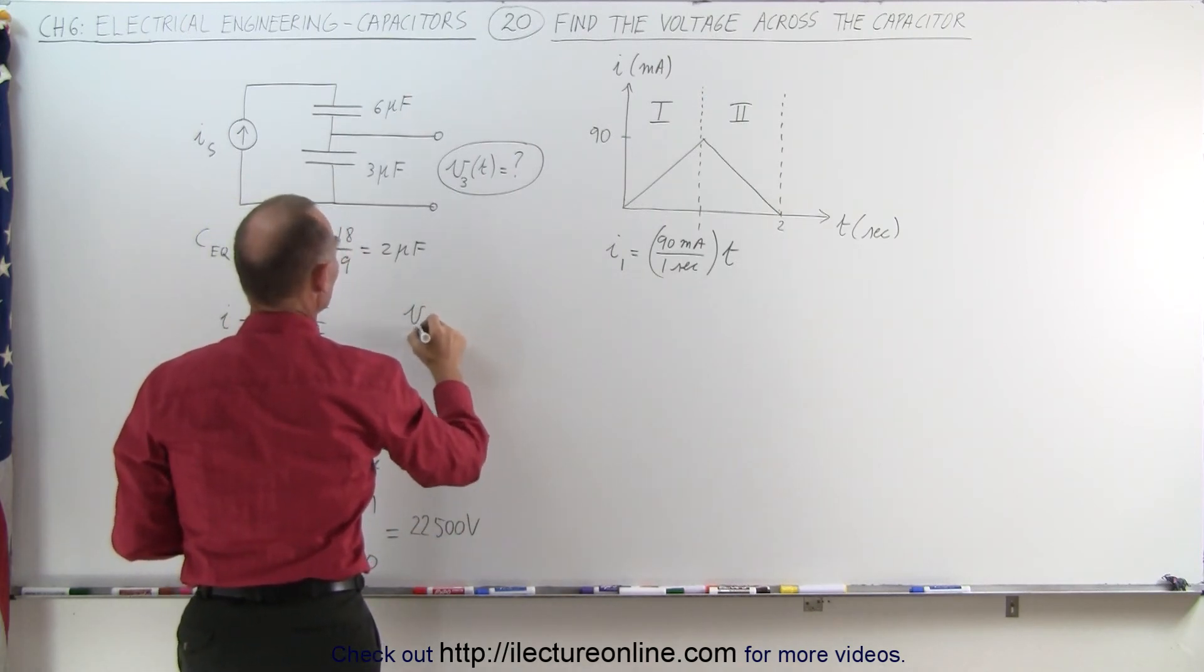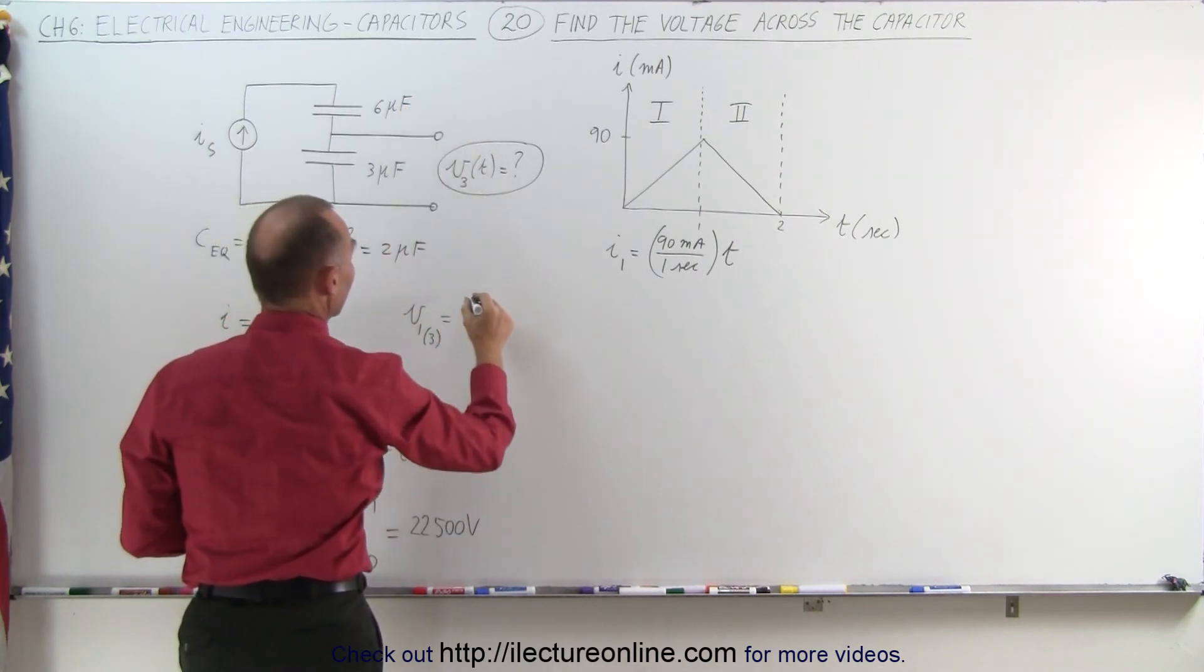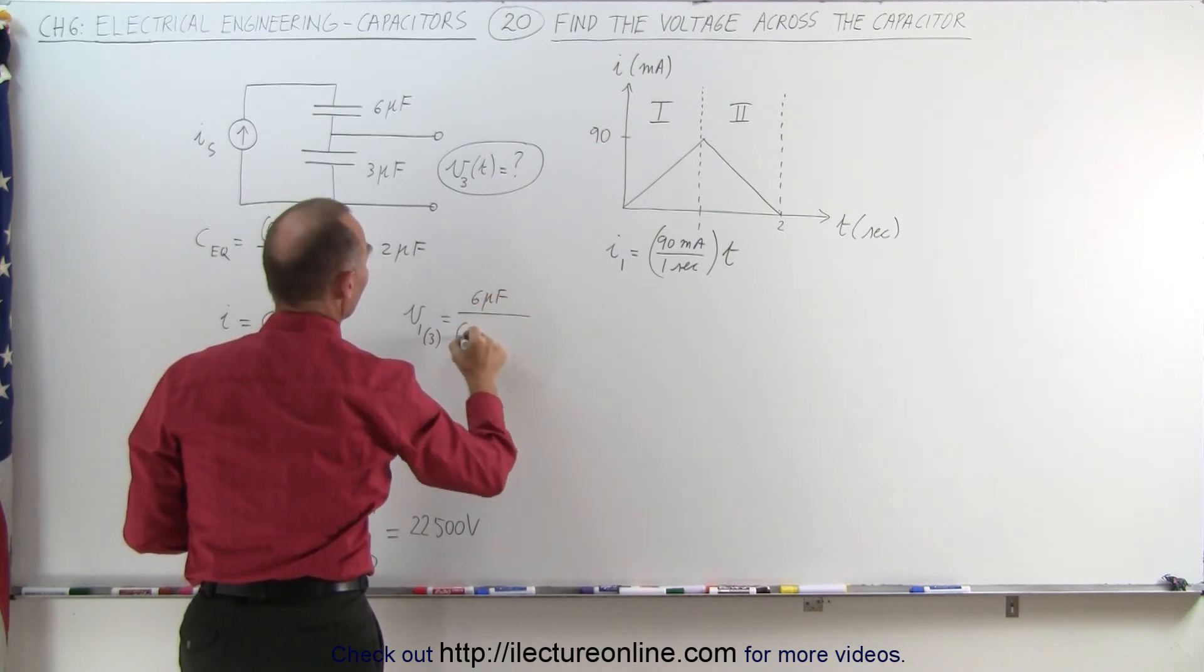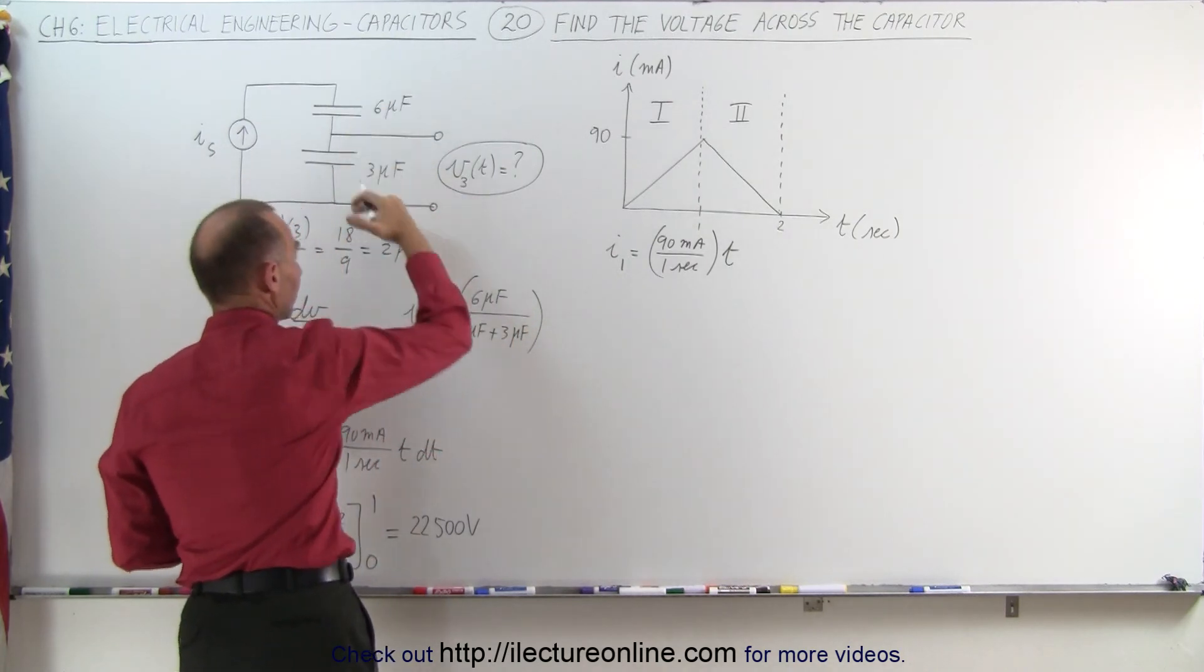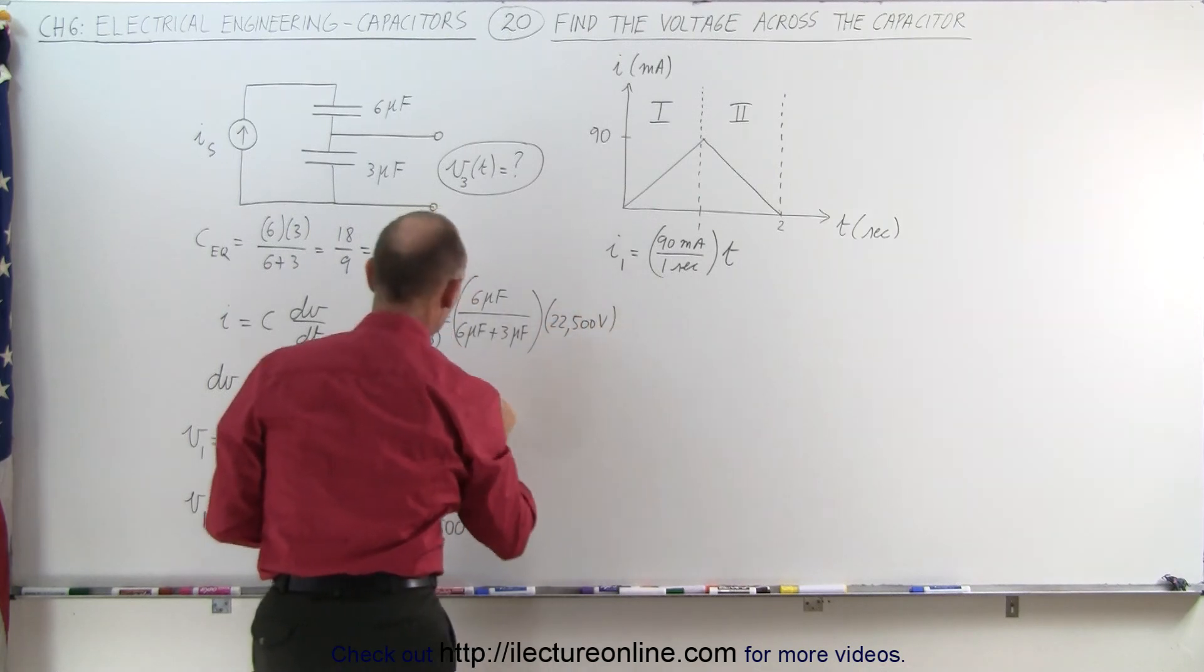So, the voltage in region 1 for the 3 microfarad capacitor is equal to the ratio of the capacitance, that would be the capacitance of the other capacitor, that would be 6 microfarads, divided by the sum, 6 microfarads plus 3 microfarads, multiplied times the total voltage across both capacitors, V total, which is 22,500 volts.